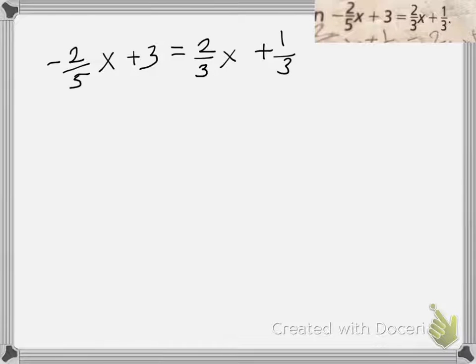In this equation, notice there's three fractions and only one whole number. Since there's more fractions than whole numbers, we're going to make all of them a fraction and then make all of them have the same denominator. See how this three has nothing underneath? I'm going to put a one.